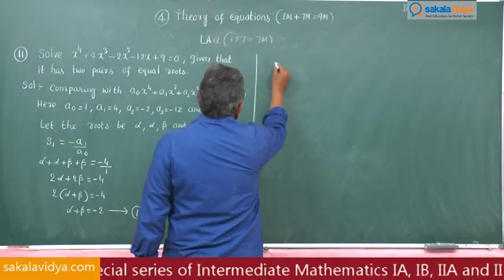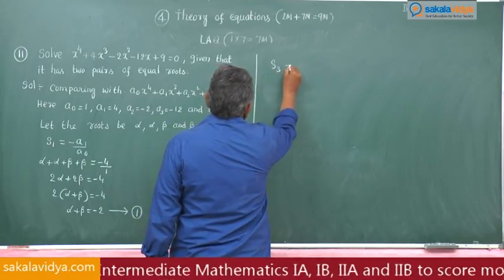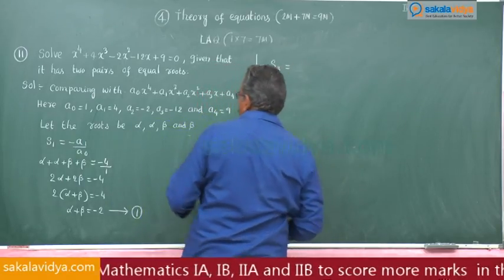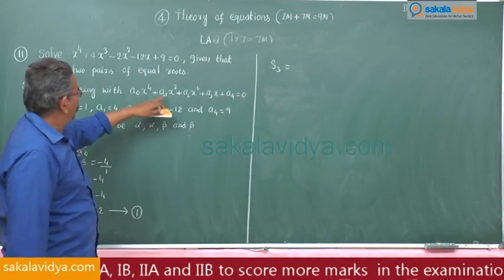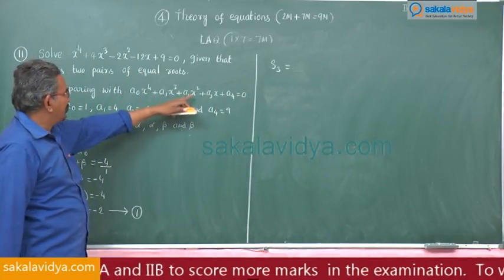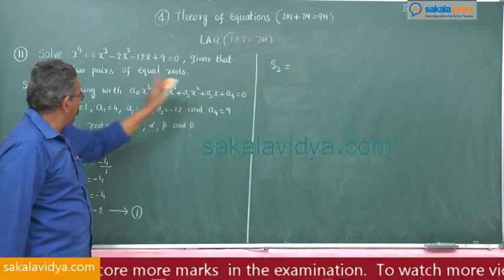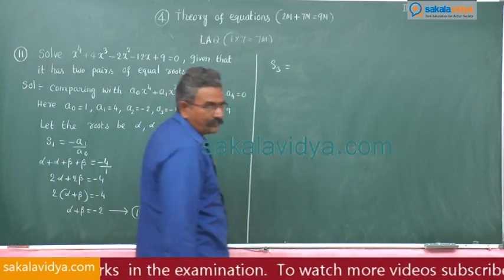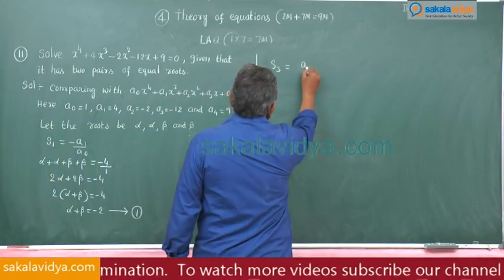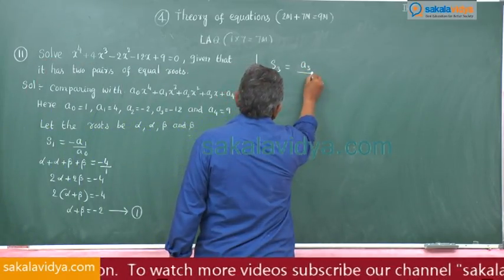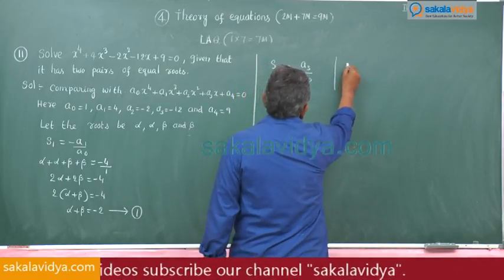Now consider S3. S3 is given by minus a3 by a0. Let us write down S3 for roots alpha, beta, gamma, delta.